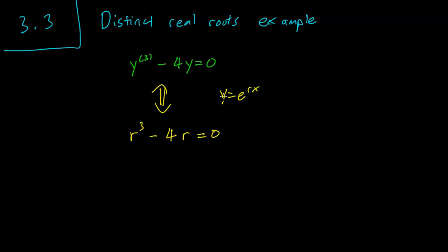By the way, please let me know if you still don't understand this step. This is something that we covered in the previous chapter, chapter 2. Anyway, this corresponds to r³ - 4r = 0 and this is our characteristic polynomial.